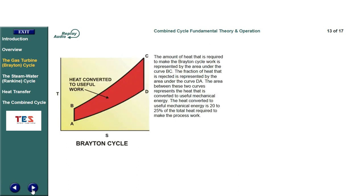The amount of heat that is required to make the Brayton cycle work is represented by the area under the curve BC. The fraction of heat that is rejected is represented by the area under the curve DA. The area between these two curves represents the heat that is converted to useful mechanical energy. The heat converted to useful mechanical energy is 20 to 25 percent of the total heat required to make the process work.